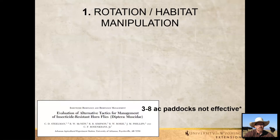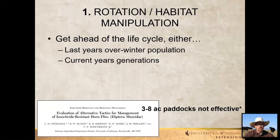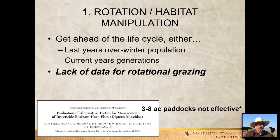In terms of rotation and habitat manipulation, not much research has been done. The main study evaluated alternative tactics for management of insecticide-resistant horn flies. One problem is that horn flies can become resistant to chemicals, so we need to be judicious and integrate strategies. What they found was that rotating through three to eight acre paddocks did not affect horn fly numbers. Conceptually this might be a good strategy — you might get ahead of the life cycle and leave larvae behind — but there's a real lack of data, particularly for much larger movements.